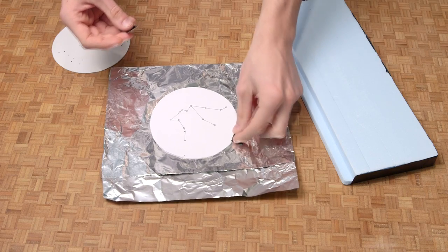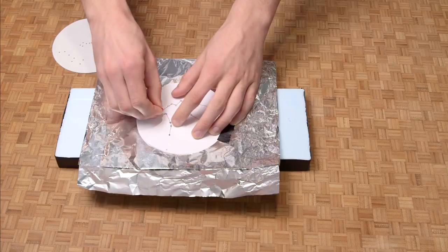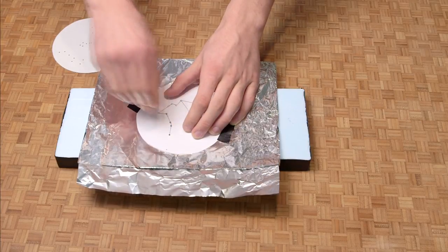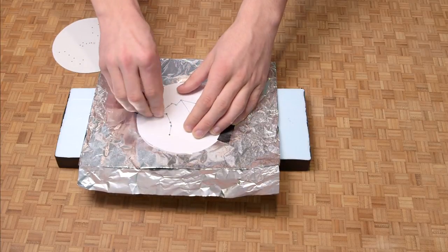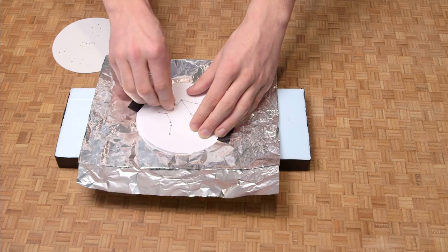Next, you put your paper constellation over the aluminum foil cover and start poking your pin or sharp pencil through the paper and foil. This will poke out your stars. I put a piece of styrofoam underneath while I do this.